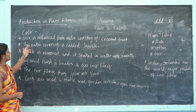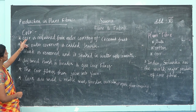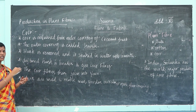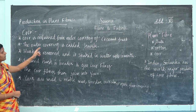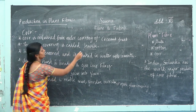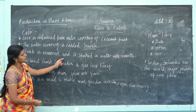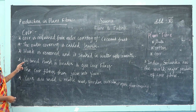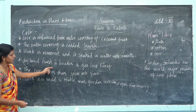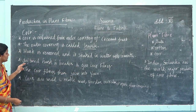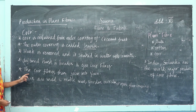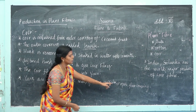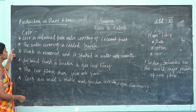The next topic is production of coir fibers. Coir fiber is obtained from the outer covering of the coconut fruit. The outer covering is called husk. The husk is removed and soaked into water for up to 10 months. The softened husk is beaten to get coir fibers. The coir fibers are spun into yarn, and these yarns are used to make mats, garden articles, ropes, and floor coverings.